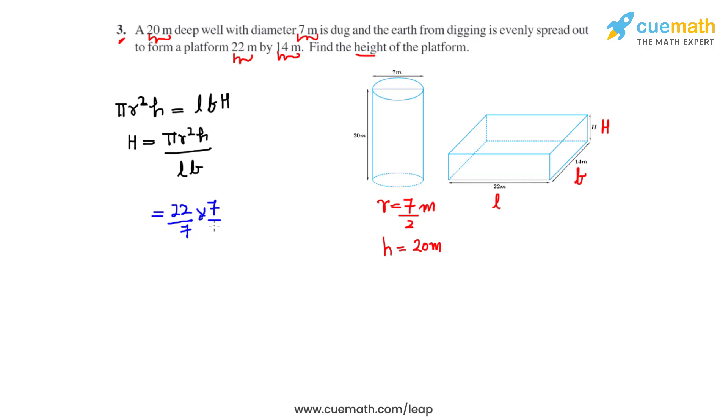The height of the well, or the depth of the well, is 20. This whole is divided by 22 times 14. So we can cancel out 7 and 7, 2 and 10, 2 and 11.